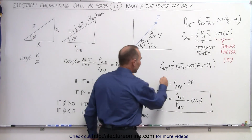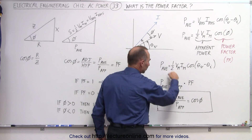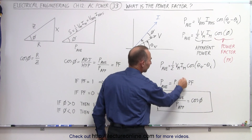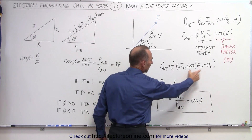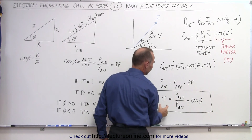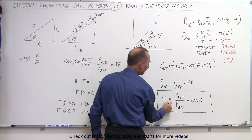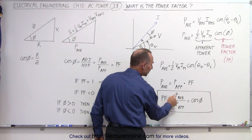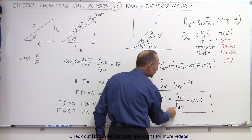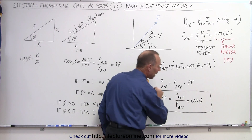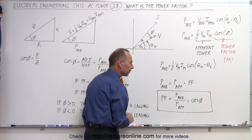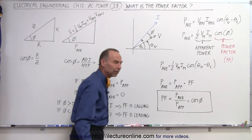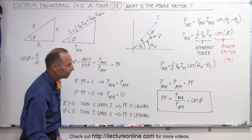If we call this the average power, and call this the apparent power P_APP, and call this the power factor, we can see that the power factor is simply the ratio of the average power divided by the apparent power. The power factor is described as the cosine of the phase angle.